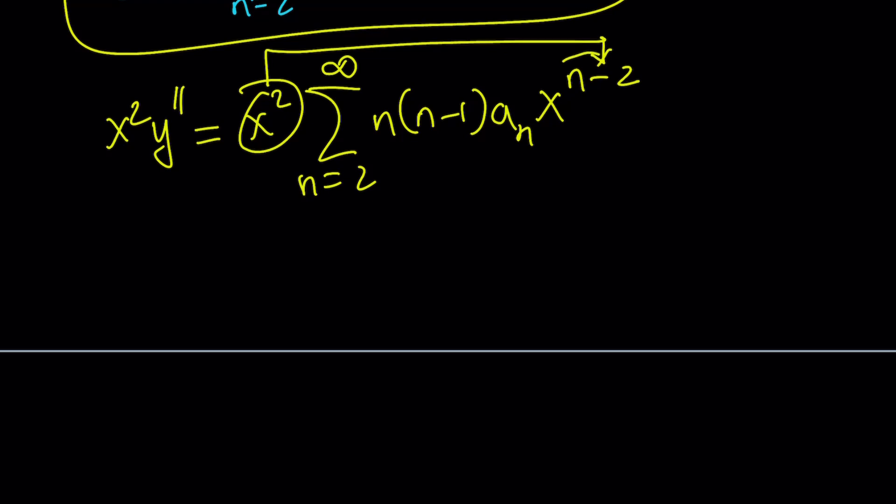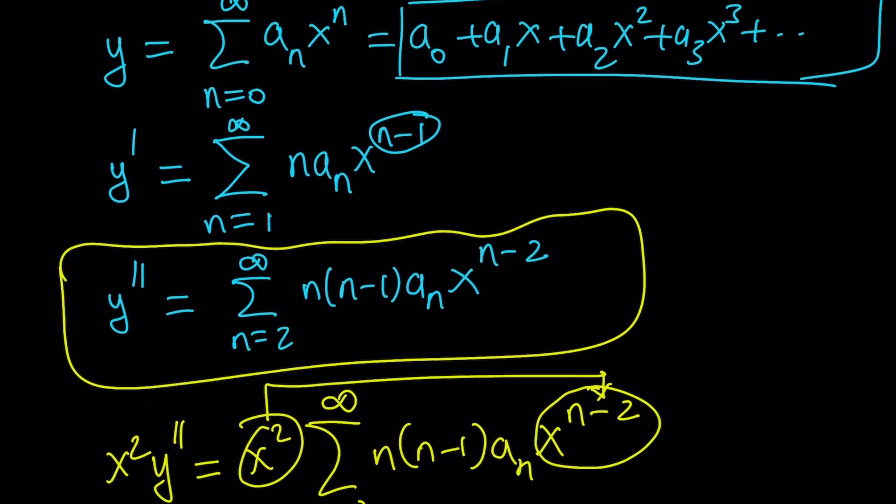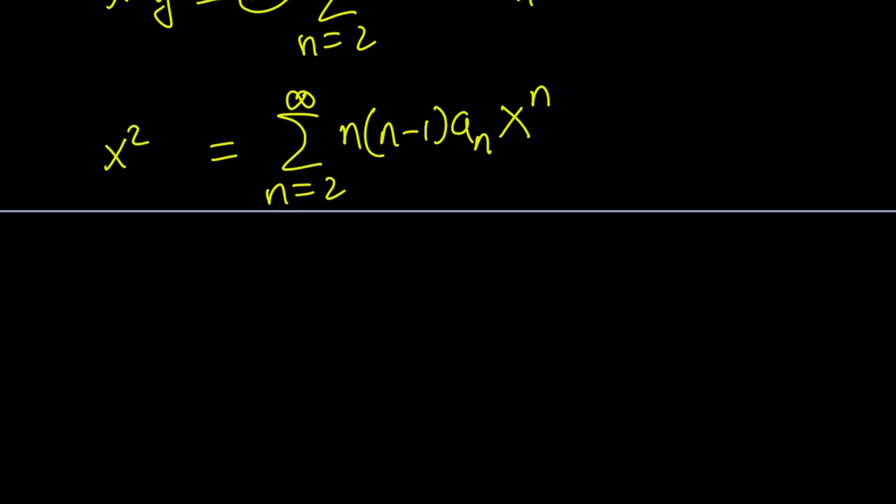So when we get that inside, it's going to be multiplied by x to the power n minus 2, and that is going to give us x to the power n. So we're going to get the following: n equals 2 to infinity n times n minus 1 times a sub n times x to the power n. So kind of like the first expression, except it has some coefficient. And now we do want this to be equal to y, so we're going to go ahead and set it equal to y, and y was n equals 0 to infinity, a sub n, x to the power n. Now, one thing that's interesting about this expression is we're going to put them on the same side and set it equal to 0.